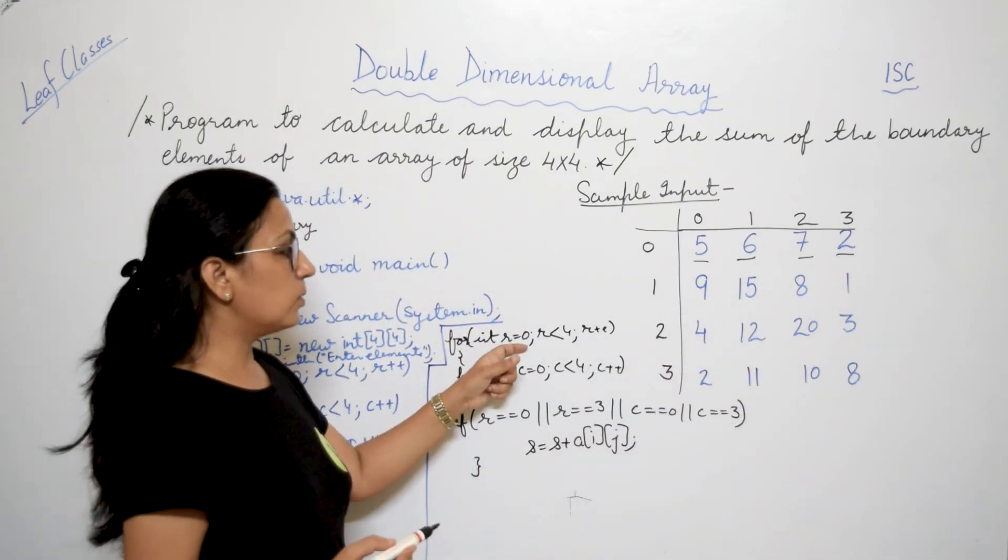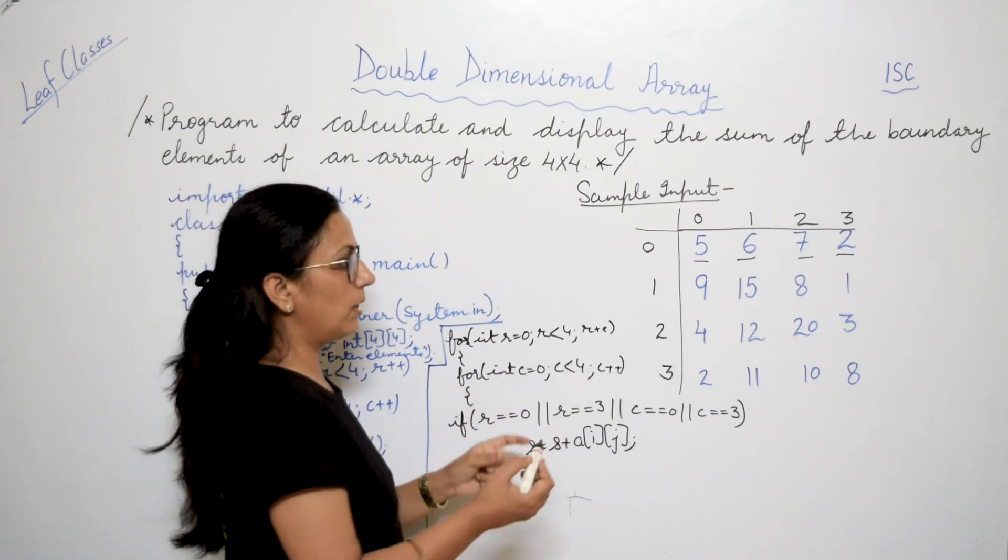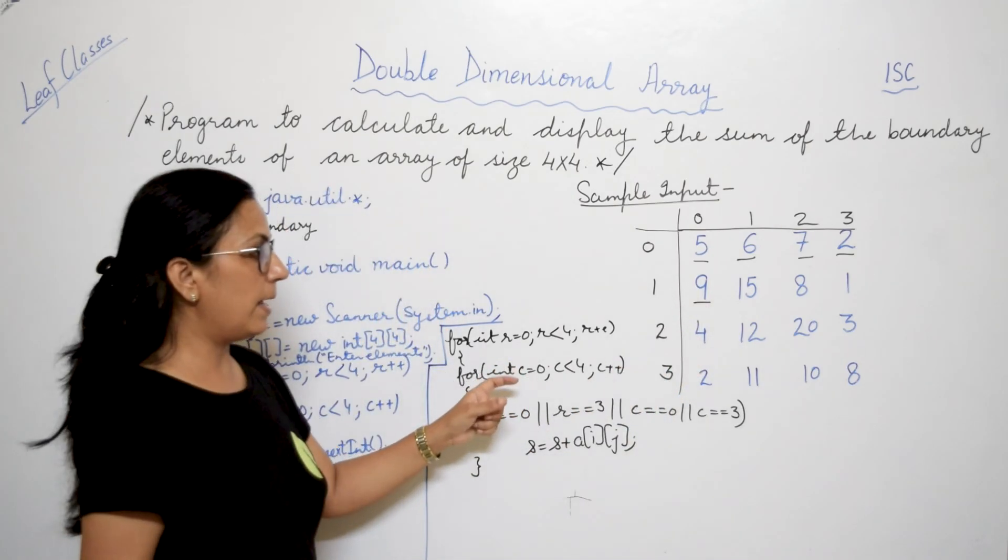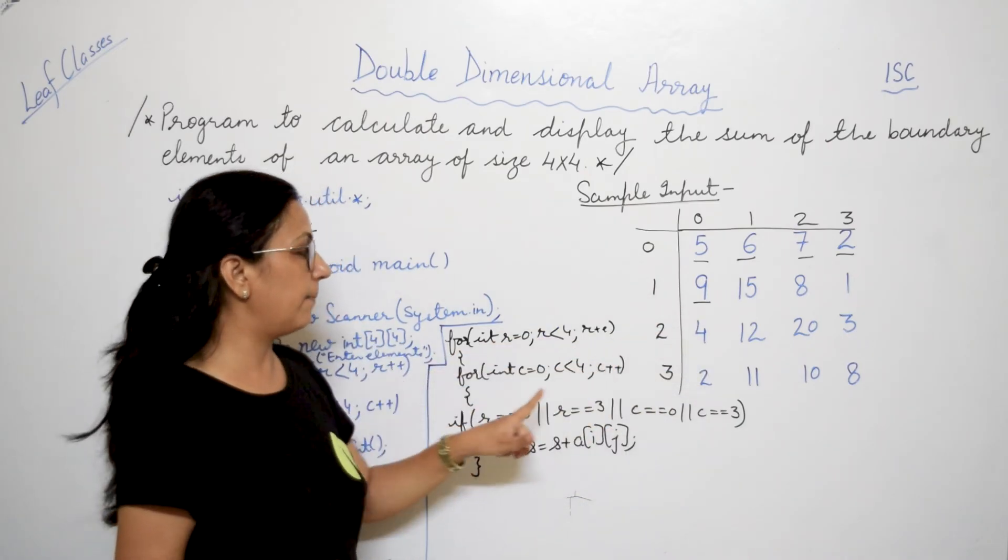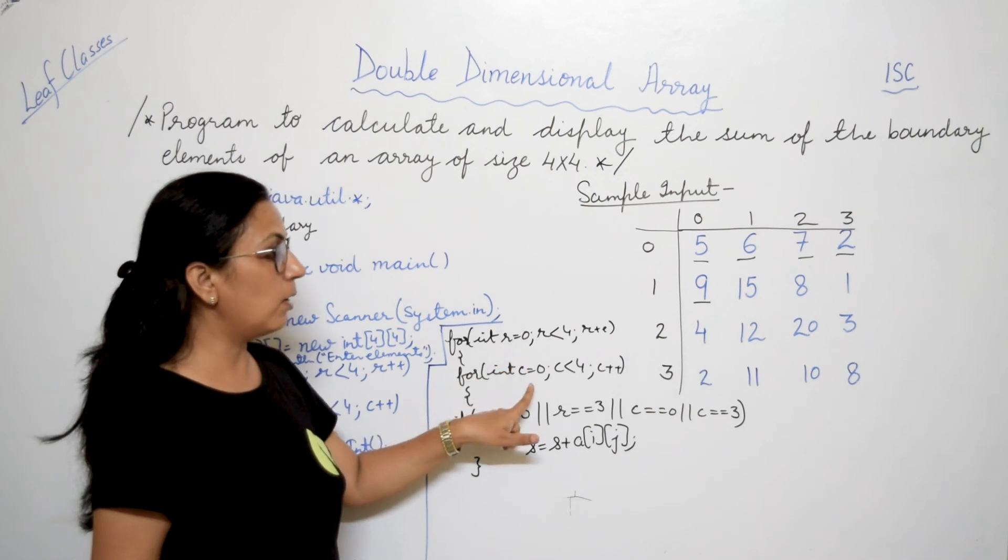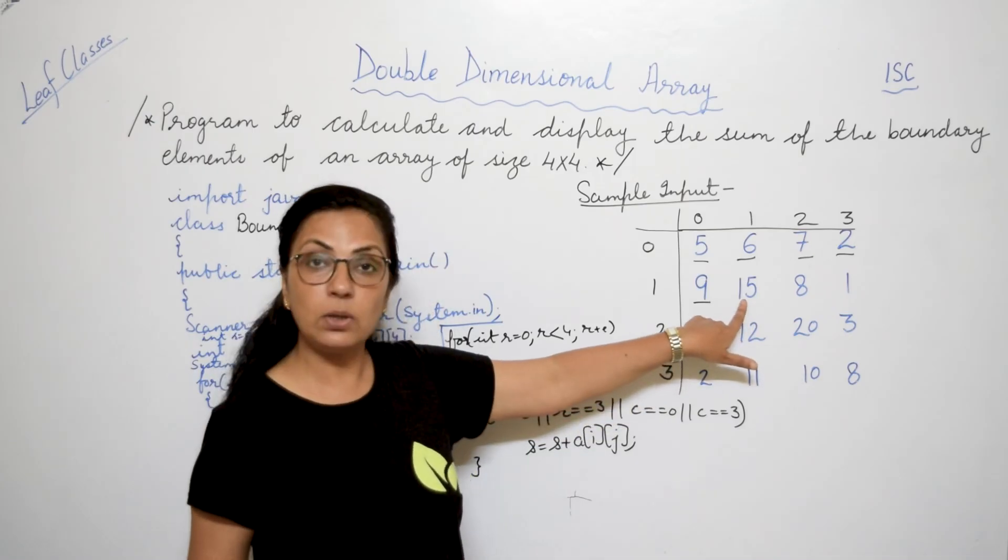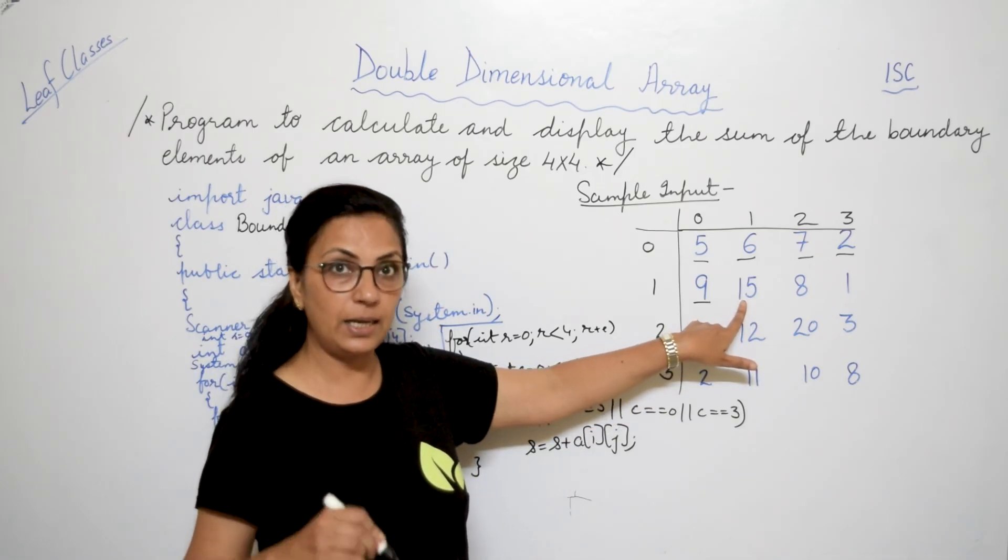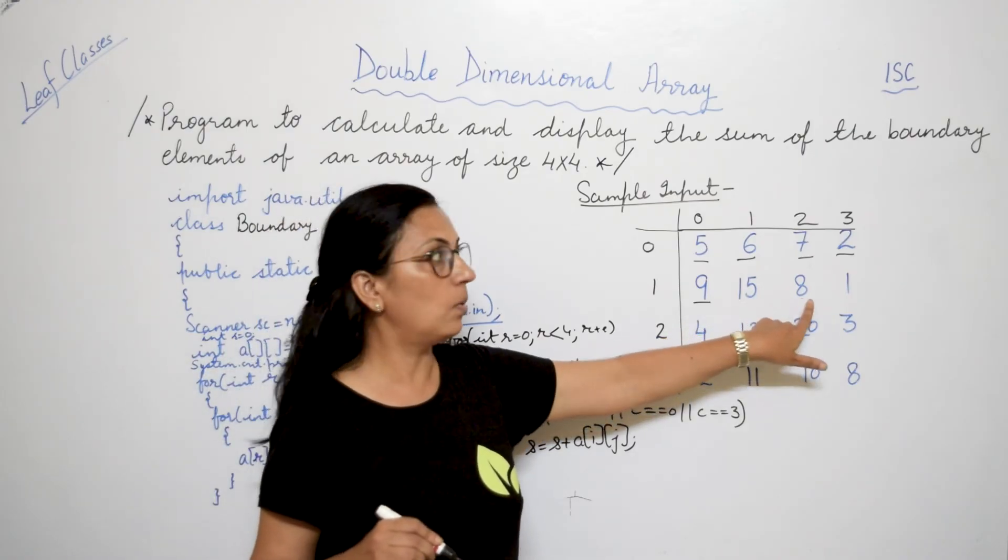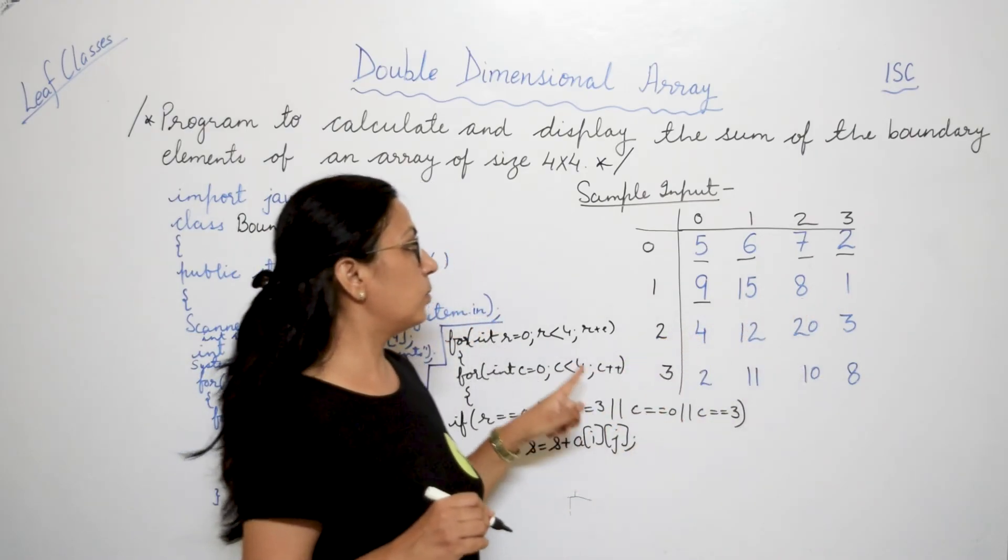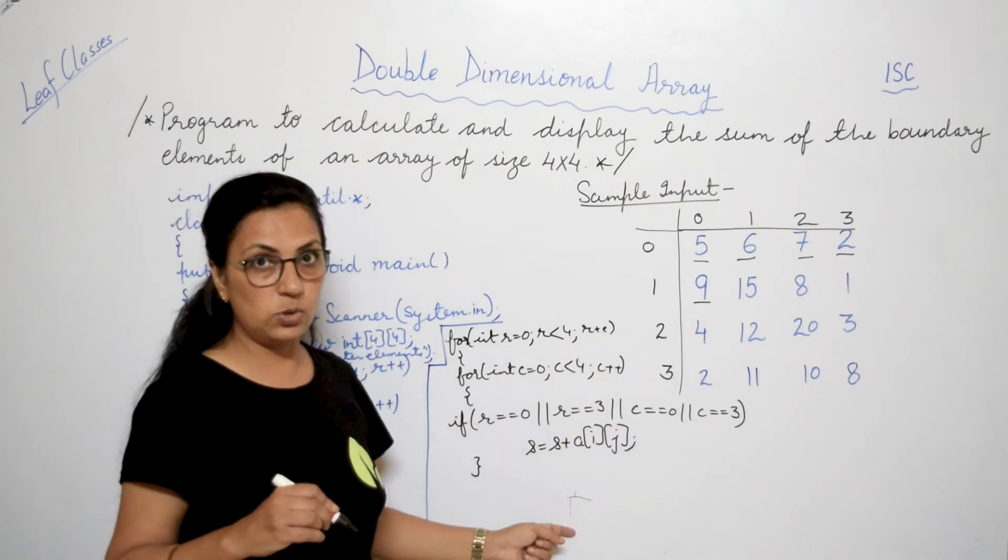Next time, r is 1, c will start from 0, 1, 2, 3. So r is 1, and here what is there? Your c is 0. This condition is true, so this element came. Next time, r is 1 and c is also 1. So no condition is satisfying, so your 15 will not be added. Similarly, r is 1, c is 2, element will not be added. Then r is 1 and c is 3. Here again, your element will be added.